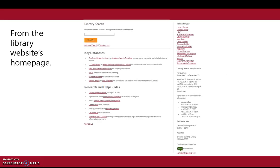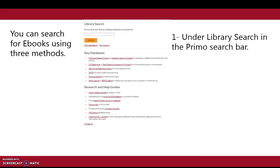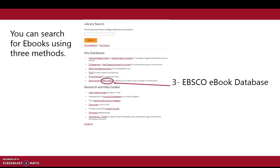From the library website's homepage, there are three methods by which you can search for ebooks. The first is under the library search in the Primo search bar, the second is in the Ebook Central database, and the third is in the EBSCO ebook database.